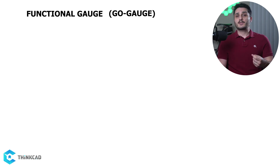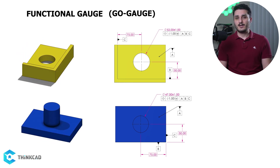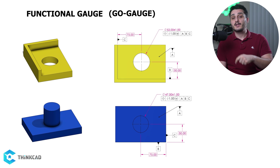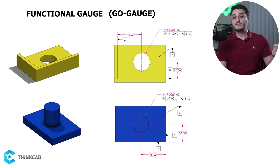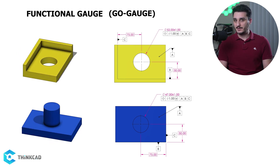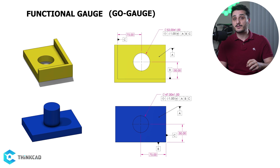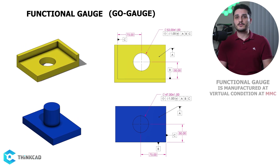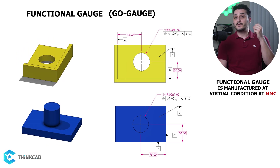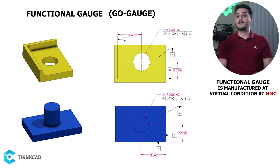Let's say you want to manufacture hundreds of these parts. You can't manufacture them without doing inspection. You would have to restrict datums A, B, and C in that order and start measuring the size of your features and the position of their center axes, which is a lot of work and wouldn't be feasible at large scales. A functional gauge is basically a part that you manufacture to check certain parameters during inspection. This part has to be manufactured at virtual condition at MMC. You can then simply see if your part can fit in this functional gauge or not, and if it does, you know the parameters you're controlling are in spec.